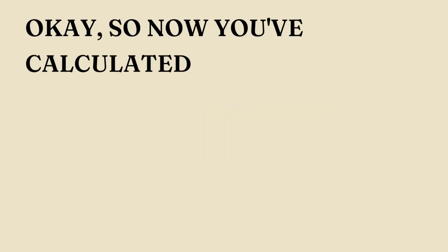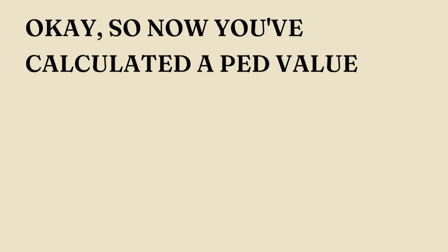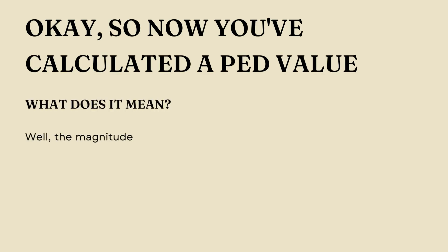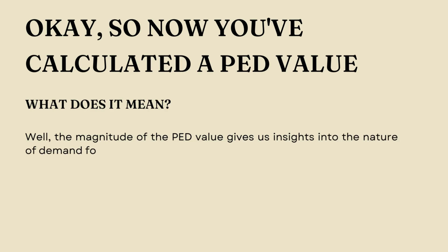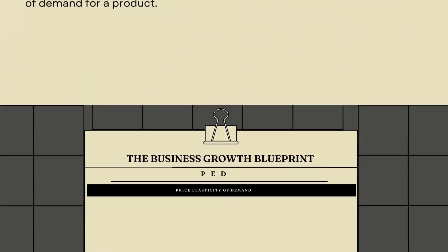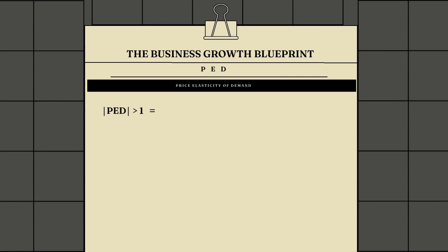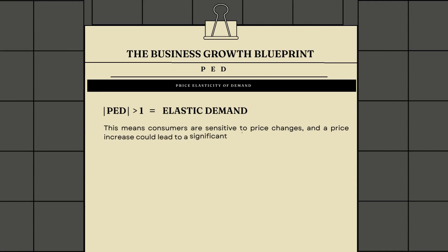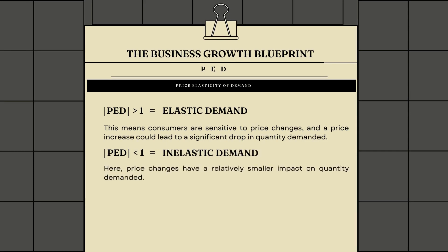Now you've calculated a PED value — what does it mean? The magnitude of the PED value gives us insights into the nature of demand for a product. If the absolute PED value is greater than 1, we're dealing with elastic demand, meaning consumers are sensitive to price changes and a price increase could lead to a significant drop in quantity demanded. When the absolute PED value is less than 1, we have inelastic demand, where price changes have a relatively smaller impact on quantity demanded. And when the PED value is exactly 1, we're looking at unit elastic demand.